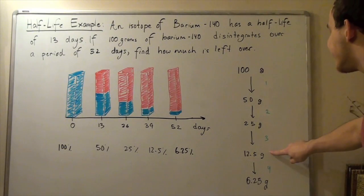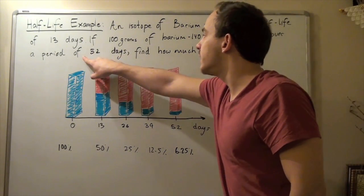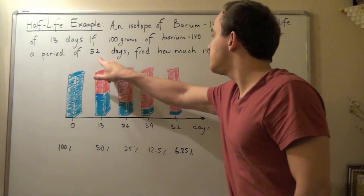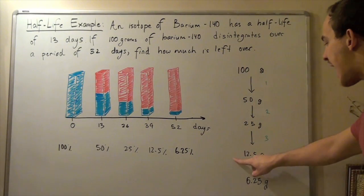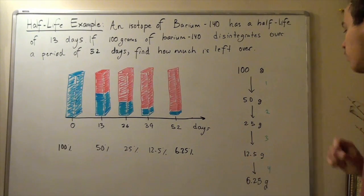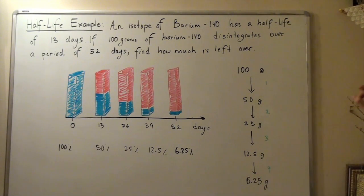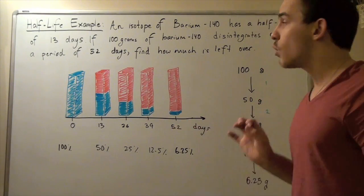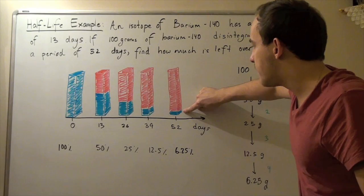And finally, what is left over after one more half-life? Because remember, we're looking at a total period of 52 days. So after the fourth half-life, we have half of this, half of 12.5 grams. So we have 6.25 grams left over after four half-lives or 52 days, which is represented by this amount.